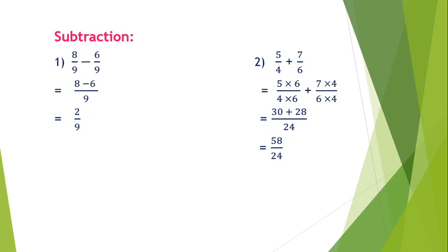Next: subtraction. First example: 8 upon 9 minus 6 upon 9. Subtraction behaves the same as addition for like denominators. Since the denominators are the same, we take 9 as common. 8 minus 6 gives 2 upon 9.